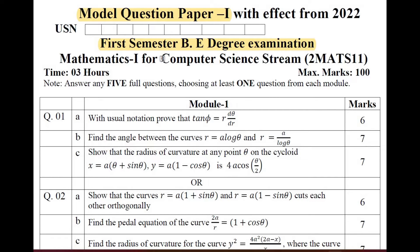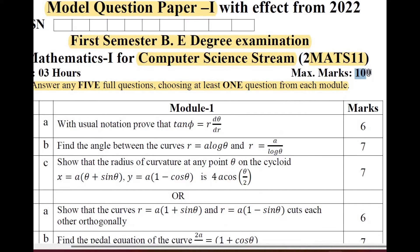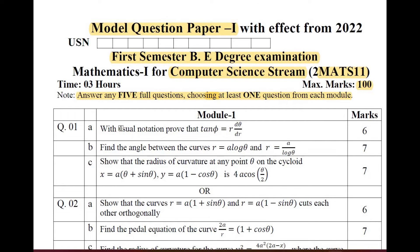According to stream, I have chosen the Computer Science stream. You should know the way of answering the question paper. The note states you should answer any five full questions, choosing at least one question from each module. From each module two questions will be provided; you should answer one full question. Each module carries 20 marks, and 20 marks into 5 modules gives 100 marks total.